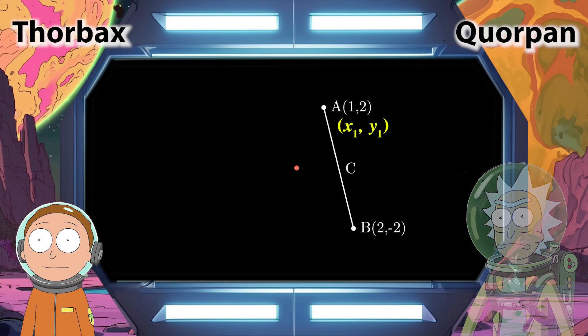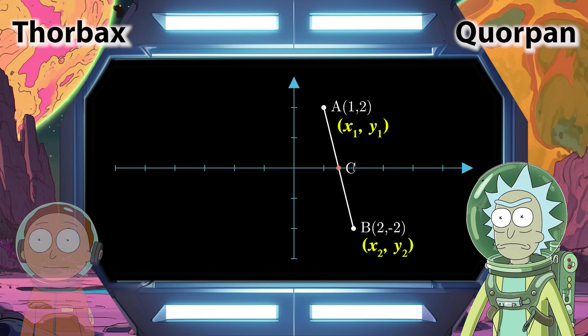Oh, so that means that the planet Corpan represents the second coordinate point and that X2 equals 2 and Y2 equals negative 2. Yes, nice work, Morty. Now plug those values into the midpoint formula and you have your midpoint.